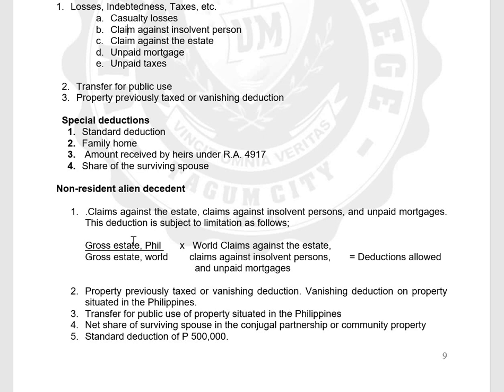An NRA can also claim vanishing deduction, considering that the property is situated in the Philippines or included in the gross estate. Transfer for public use is also allowed, provided the property is in the Philippines or included in the gross estate. If married and a resident, the share of the surviving spouse is also deductible. An NRA is also allowed to deduct the standard deduction of P500,000.